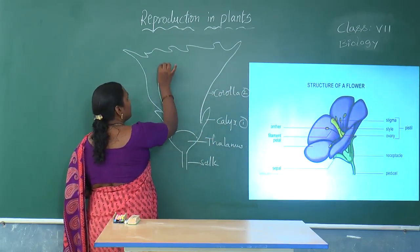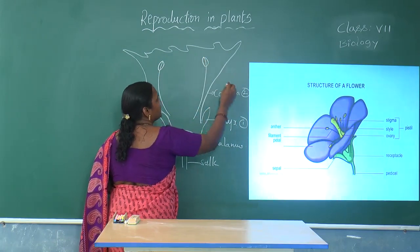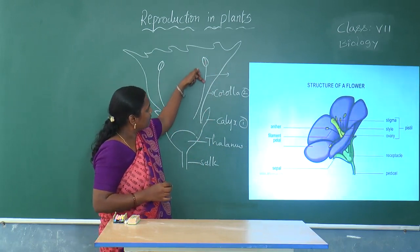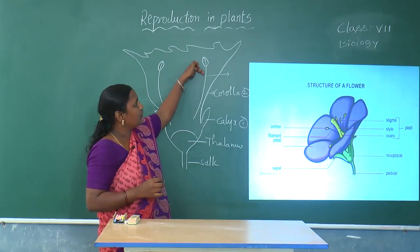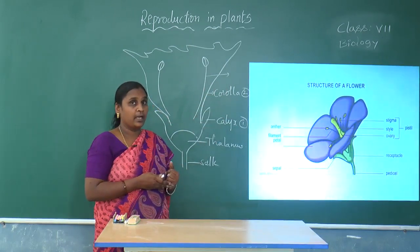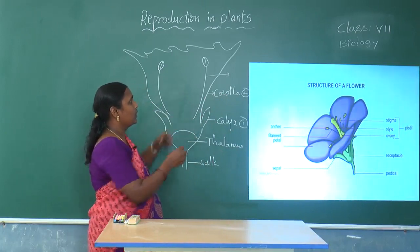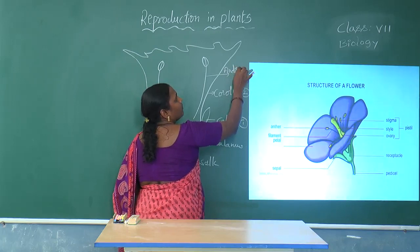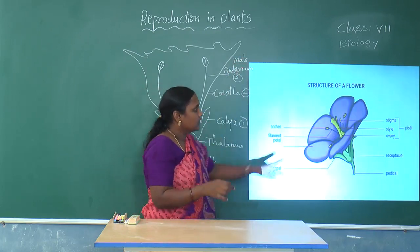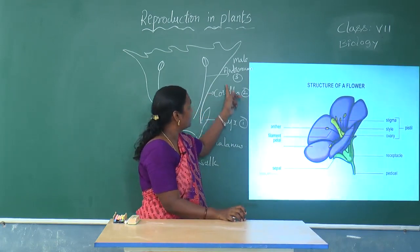The third whorl is called the androecium, consisting of the filament and anther lobes. The androecium has a filament with two anther lobes, just like a tube-like structure. This is the main essential whorl of the plant. The calyx and corolla are the non-essential whorls. The filament and anther lobe together are called the androecium, which is also called the male part of the plant.